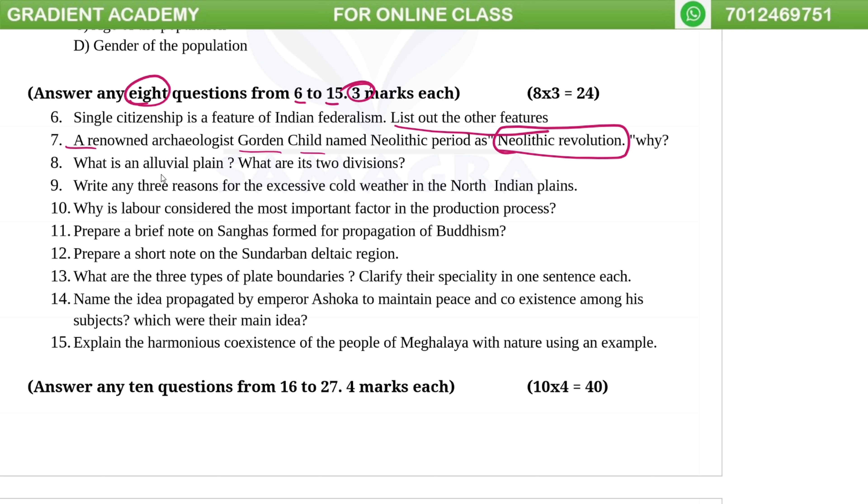What is an Alluvial Plain? What are its two divisions?